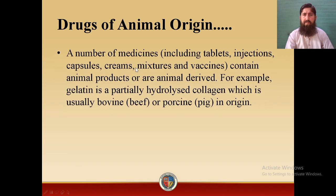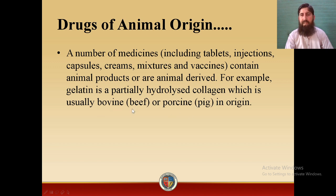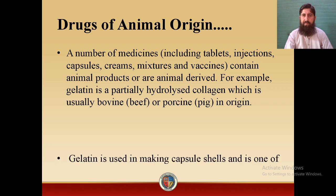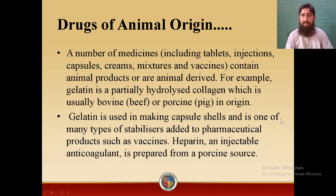A number of medicines including tablets, injections, capsules, creams, mixtures, and vaccines contain animal products or animal-derived products. For example, gelatin is a partially hydrolyzed collagen — when collagen fibers are partially hydrolyzed, they are converted into gelatin. Gelatin is usually bovine, meaning it is obtained from members of family Bovidae. If a drug is derived from family Bovidae it is known as bovine, and if derived from pork it is known as porcine.